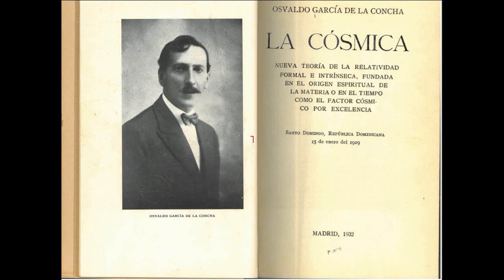Let us now quantitatively determine this dependence. A clock located at a distance V from the center of the rotating disk has, with respect to K, a speed V equals WR, where W is the angular velocity of the disk K with respect to K.